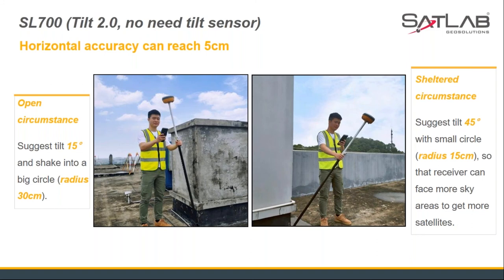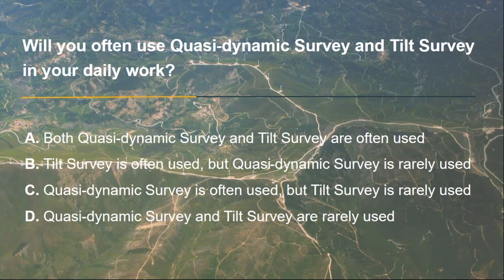When collecting with SL700 Tilt 2.0, two methods are recommended. In an open environment, it is suggested to tilt about 15 degrees and shake in a big circle. In a sheltered environment, it is suggested to tilt about 45 degrees with a small circle, so the receiver can face more sky areas to receive more satellites and achieve better accuracy. That concludes the introduction to tilt survey.